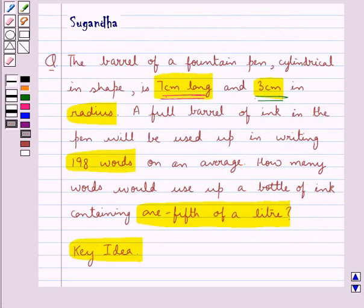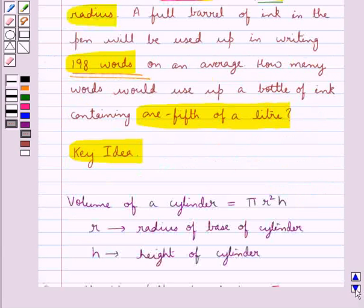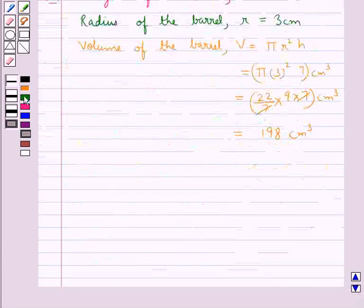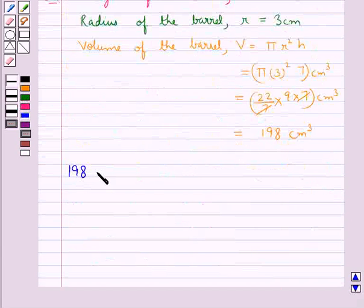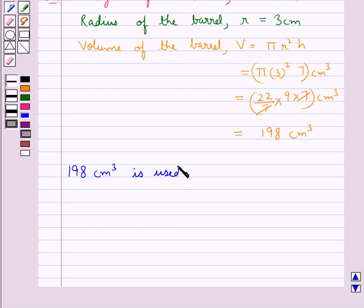In the question we have that a full barrel of ink in the pen will be used up in writing 198 words on an average. That is, we say that 198 cm³ is used for writing 198 words.